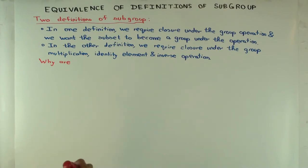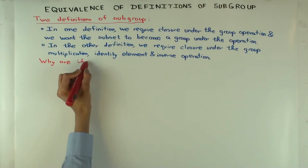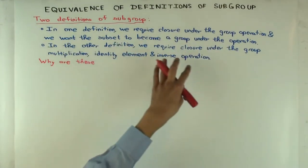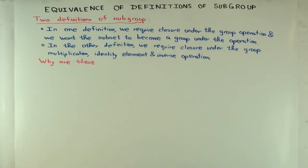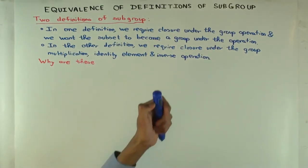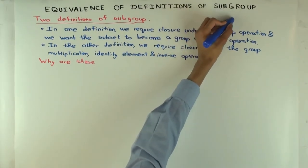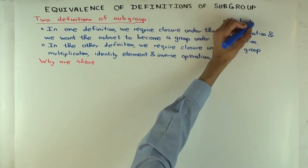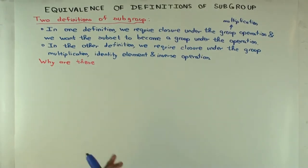The other definition requires closure under all three group operations: the group multiplication, the identity element, and the inverse operation. So in one definition, you're requiring closure only under multiplication, and with that restricted operation it becomes a group. In the other, you're requiring closure under all the operations.